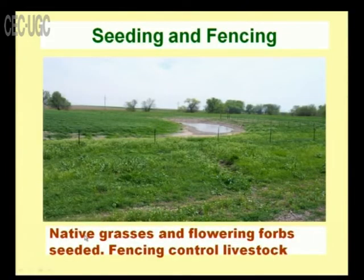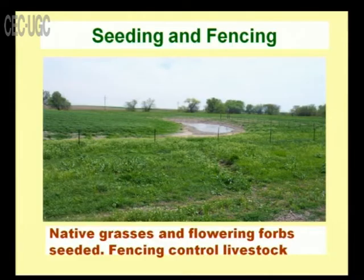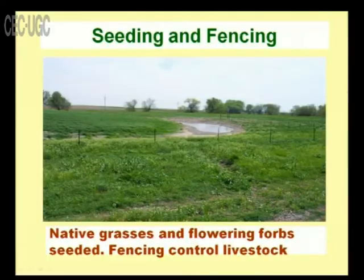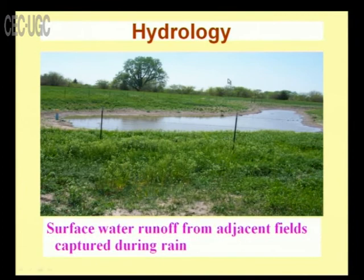Seeding and fencing follow — native grasses and flowering forbs are seeded, and fencing controls livestock. Once water is present and seeding is done, plants and herbs will start growing naturally, so the area must be secured and fenced. The hydrology then captures surface water runoff from adjacent fields during rain.